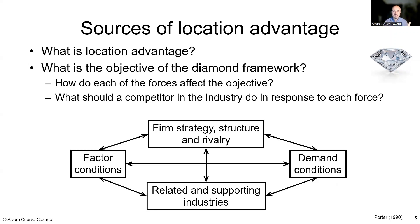The diamond model provides a framework for understanding why companies in particular locations are better than those elsewhere, and why they tend to export more. The core logic is innovation: if certain conditions enable companies to be highly innovative, they will specialize, outperform competitors in other locations, and end up exporting significantly. The model identifies four forces: factor conditions, demand conditions, related and supporting industries, and firm strategy, structure, and rivalry.